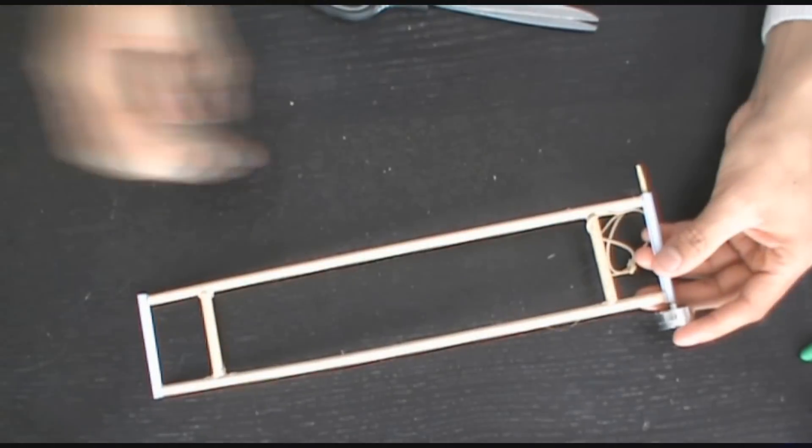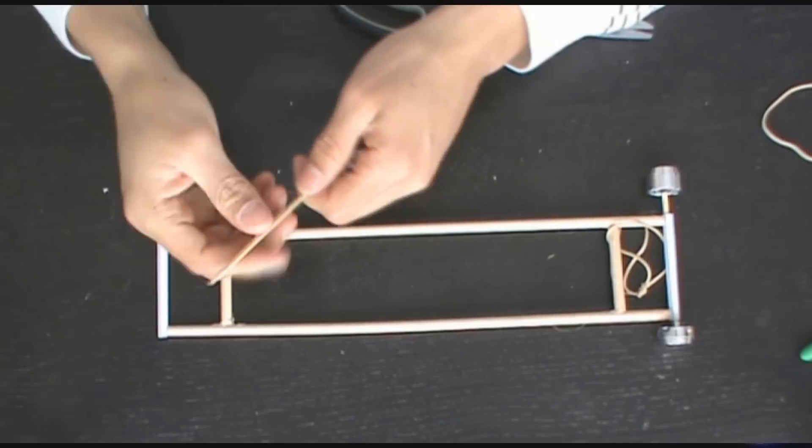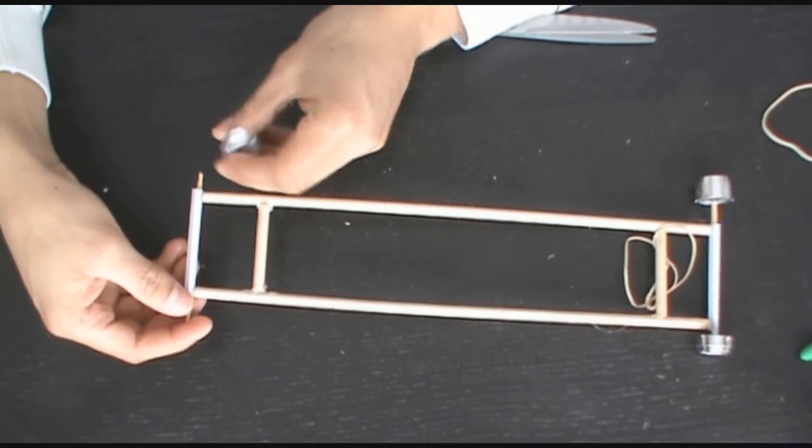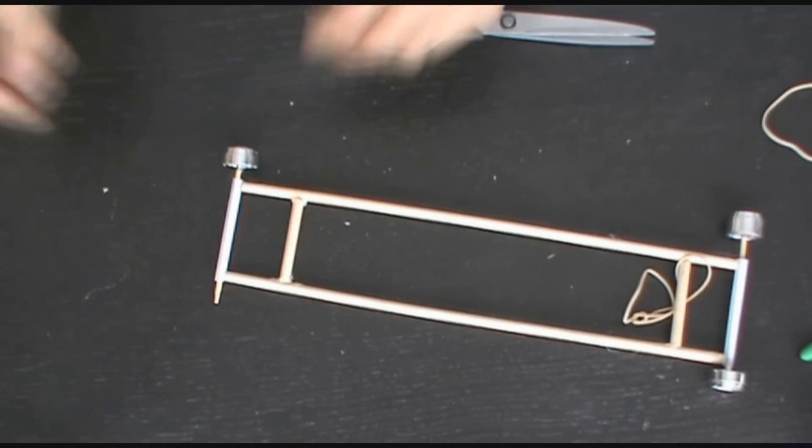Now this here is a tune-up kit that I got from the dollar store and I'm going to use the wheels from this tune-up kit and attach them onto a skewer. And these are going to serve as the front and back wheels for this vehicle.